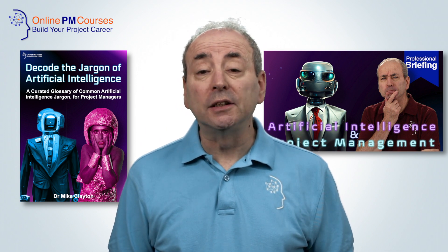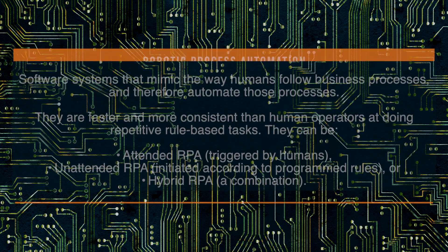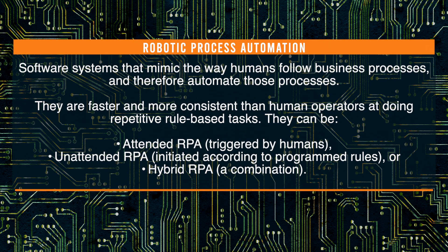Robotic process automation is software systems that mimic the way humans follow business processes and therefore automate those processes. They're faster and more consistent than human operators at doing repetitive rule-based tasks. They can be attended RPA, which is triggered by humans; unattended RPA, which is initiated according to program rules; or hybrid RPA, which is a combination of the two.